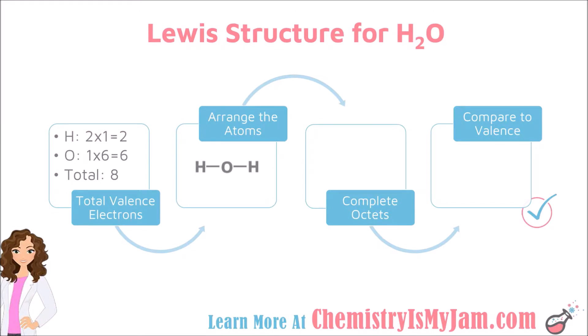The next step is to arrange the atoms, and if you will remember from the rules, you want to put the least prevalent atom in the middle. You have 2 hydrogens and 1 oxygen. Since there is less oxygen, it should go in the middle. So I have an oxygen in the middle with a hydrogen on each side, and I have drawn single bonds in between them. In this case, we only had 2 atoms attached to the central atom, so everything ended up in a straight line. However, if there were more atoms, you could have put them on the top or on the bottom.